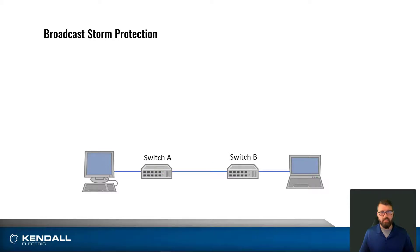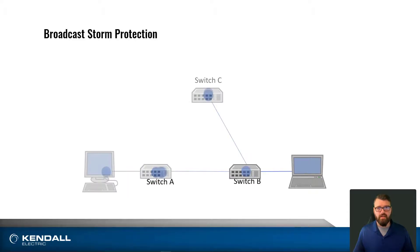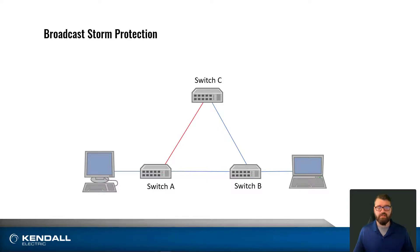Here we see a regular network with two computers and two switches. When we send information across the network, the packet travels normally as we would expect. Now let's look at an example where we were trying to expand our network. We added switch C, and everything is working as we expect. But if somebody were to accidentally connect a cable between switch C and switch A, what do you think would happen if this was a fully unmanaged network? Remember, broadcast traffic goes from all devices to all connected devices on a particular switch.